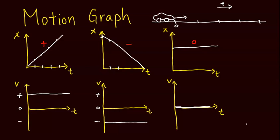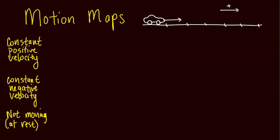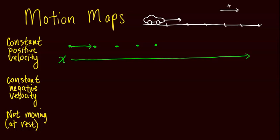Next we'll look at motion maps — another way to represent motion. In motion maps, we use dots to represent the location of the object and arrows to represent direction. For an object moving in the positive direction at constant velocity, the dots are equally spaced and arrows point to the right. The equally-spaced dots tell us constant velocity; the arrows tell us which direction.